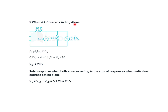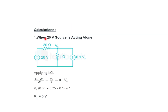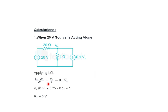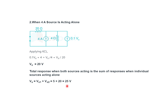When the 4A current source is acting alone, the 20V voltage source is short circuited. Applying KCL: 0.1Vx + 4 = Vx/4 + Vx/20. Solving gives Vx₂ = 20 V. By superposition, total Vx = Vx₁ + Vx₂ = 5 + 20 = 25 V.